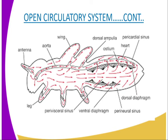Remember, ostia is the plural form of ostium. In our diagram, we have only one ostium represented. The ostia do not allow blood to flow out of the heart. The anterior part of every chamber has a pair of valves that prevent the backflow of the haemolymph.